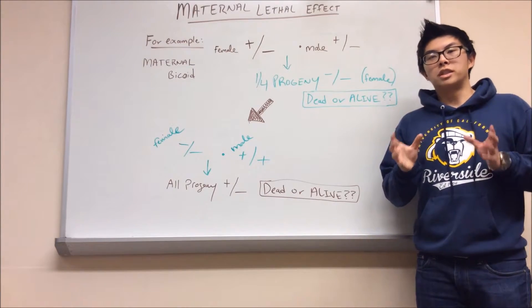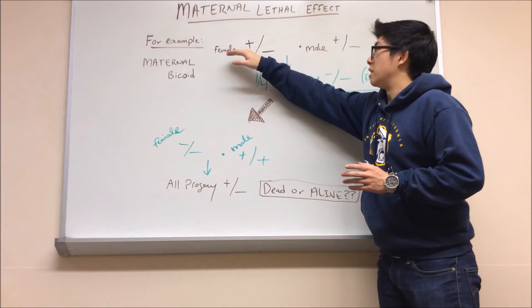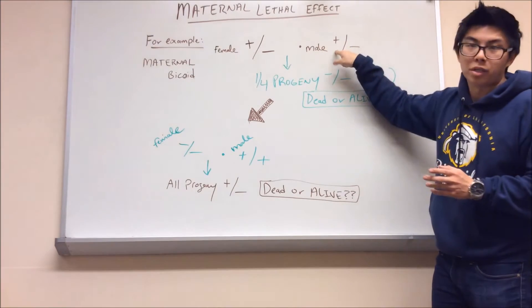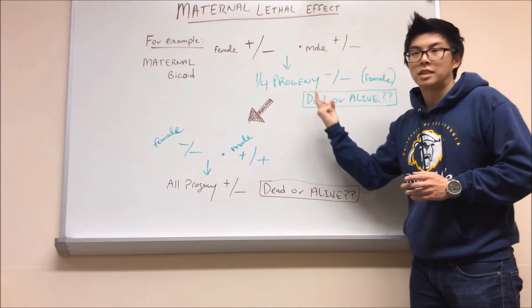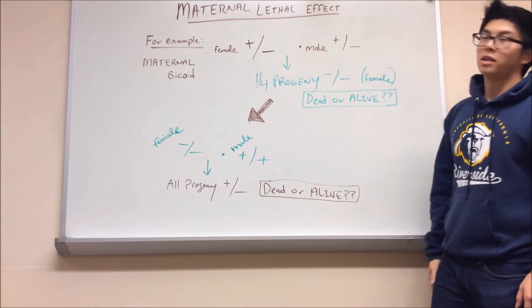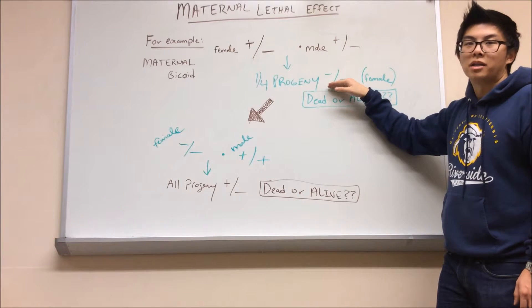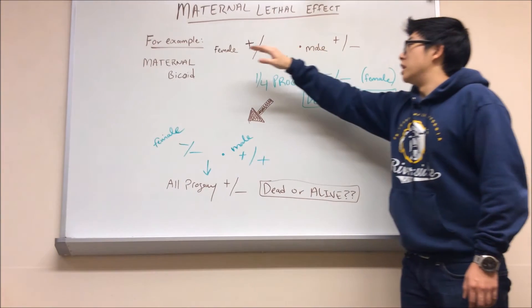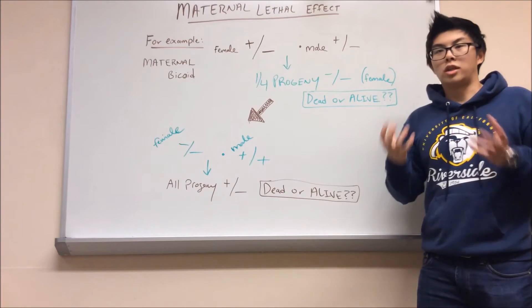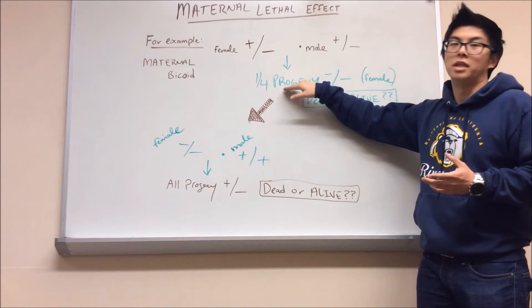A common misconception with maternal lethal genes is an example just like this one. So say I'm focusing on Bicoid. If I have a female that has at least one wild type Bicoid gene and I cross that with another male that has a wild type Bicoid gene, I end up in theory with progeny one fourth of the time that have not a single wild type copy of the Bicoid gene. Some people say this progeny is dead. However, because this is the maternal lethal effect, it doesn't matter the genotype of the progeny. It doesn't matter that the progeny cannot make a single Bicoid mRNA. All that matters is that the mother has this one wild type copy of Bicoid. Because of that, the mother can transcribe Bicoid into mRNA, which then can be deposited into this progeny in order for normal Drosophila development in this embryo.